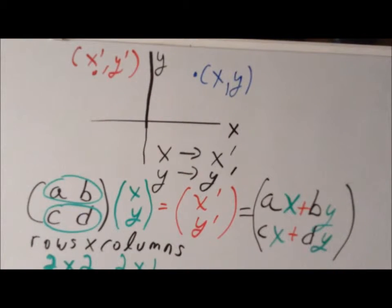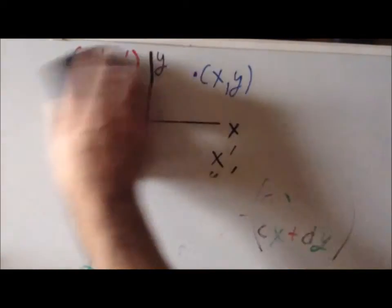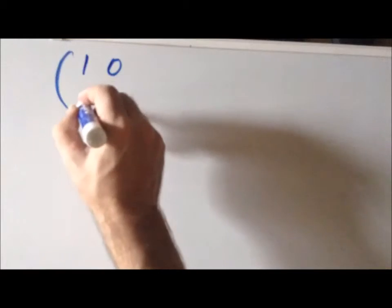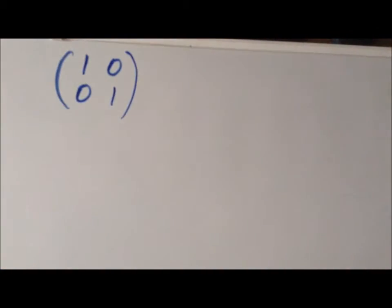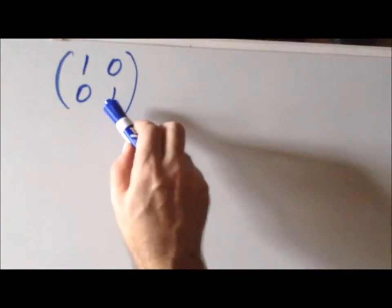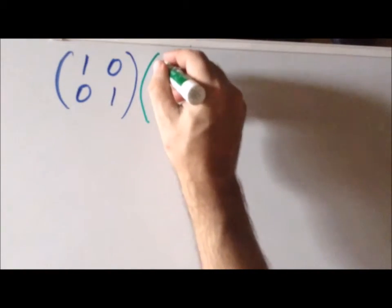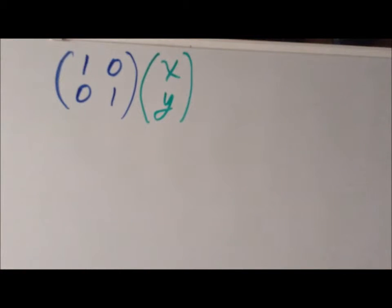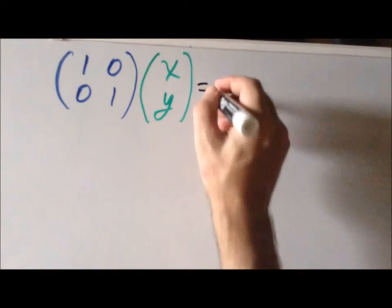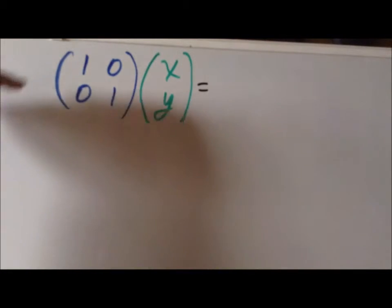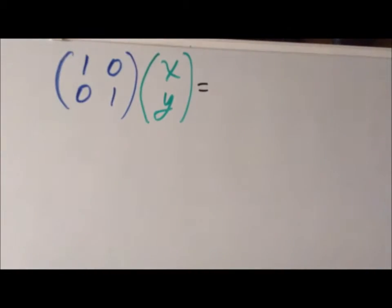The simplest of these matrices consists entirely of zeros and ones. We have the matrix: 1, 0, 0, 1. Along the diagonal we have ones, and the other positions are zeros. This matrix multiplies the point X, Y. By the rules of matrix multiplication: first row times first column gives 1 times X plus 0 times Y. Second row times first column gives 0 times X plus 1 times Y.